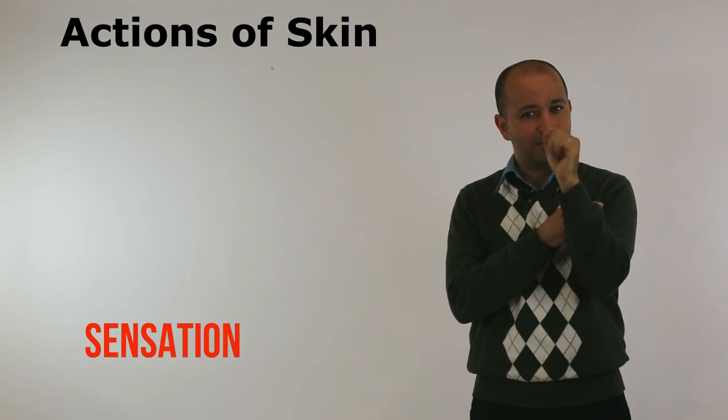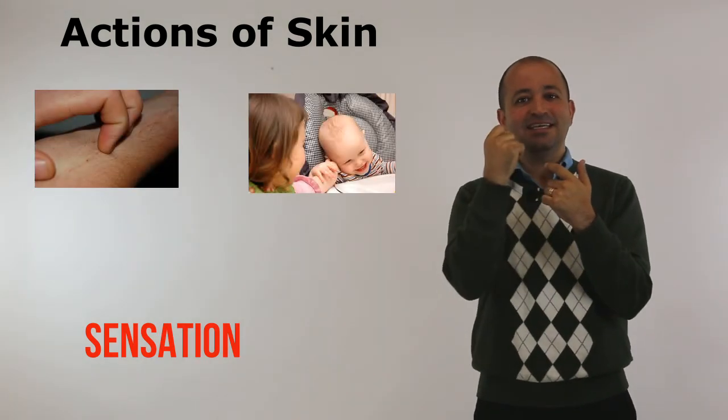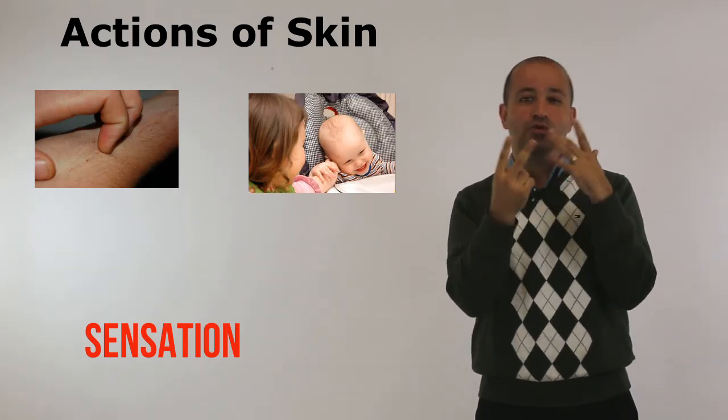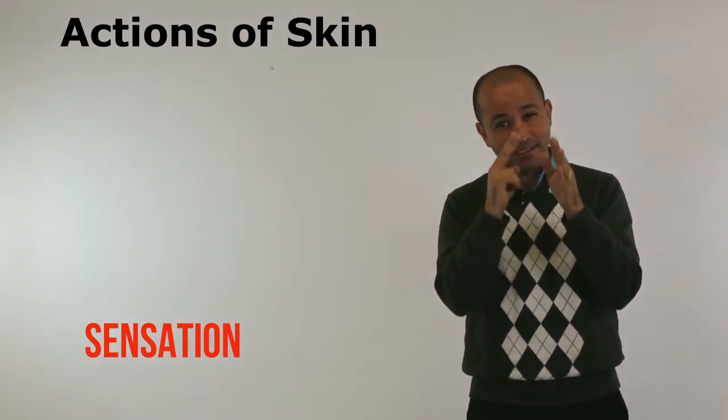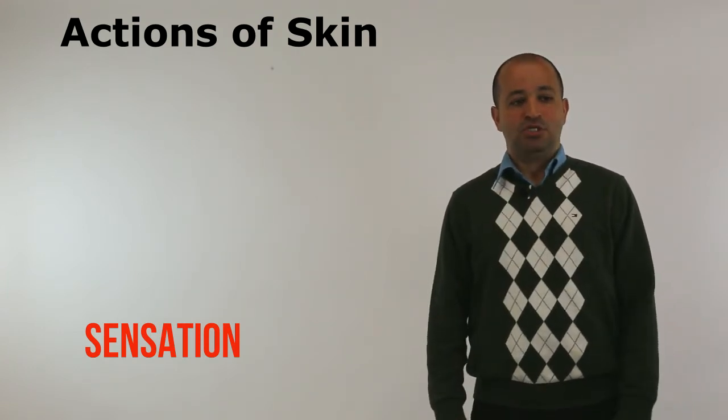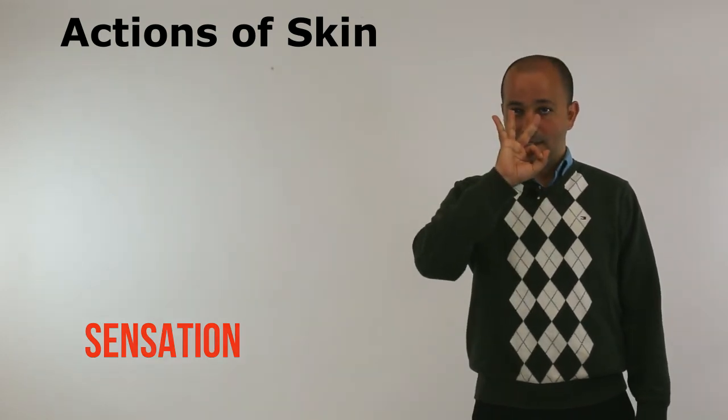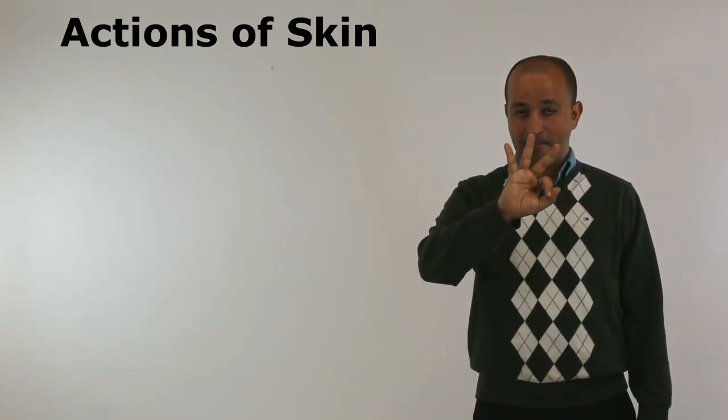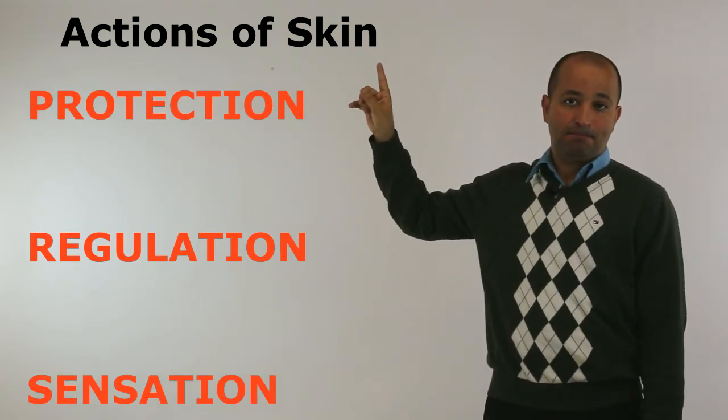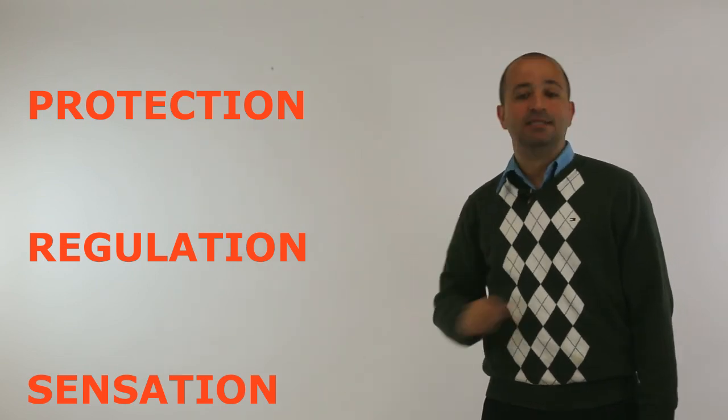And you can feel what else? What other feeling you get from the skin? Itchiness and tickling. These are also some sort of combination of different sensations that you get through your skin. So that's it. These are the three main types of activities of the skin: protection, regulation, and sensation.